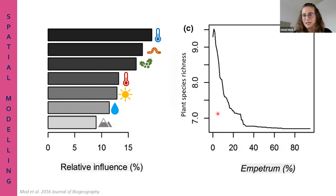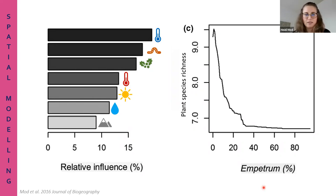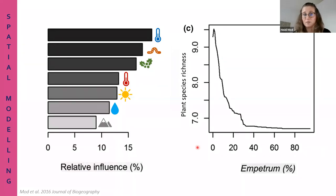We can also assess the nature of the relationship in more detail. In this case, for example, the cover of Empetrum - the most dominant species in Finnish Lapland - has a negative relationship with plant species richness.